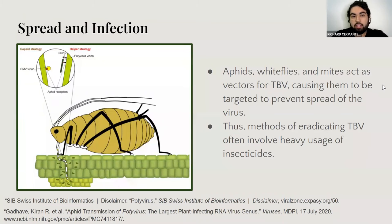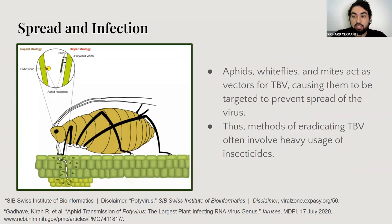Now we can get into how TBV actually spreads and infects. Usually when we think about infection and spreading, we think about coughing or sneezing, but with TBV we actually have vectors. These include aphids, mites, and whiteflies. The main vectors for TBV are actually aphids. When the aphid punctures with its stylet an infected plant, it draws up TBV through the stylet, and the TBV attaches through aphid receptors in the stylet thanks to its coat proteins.